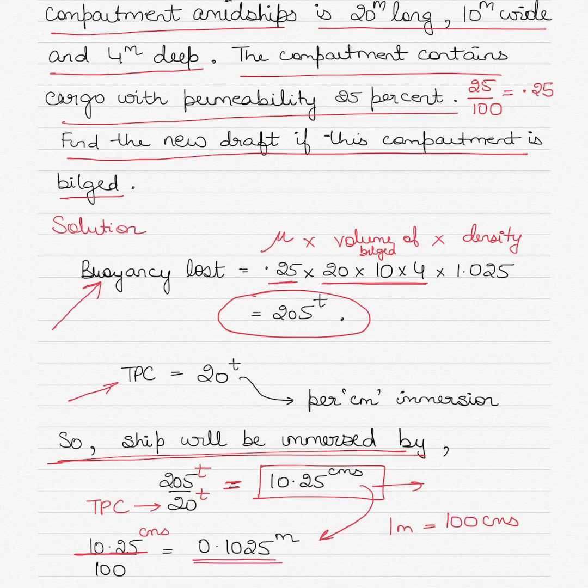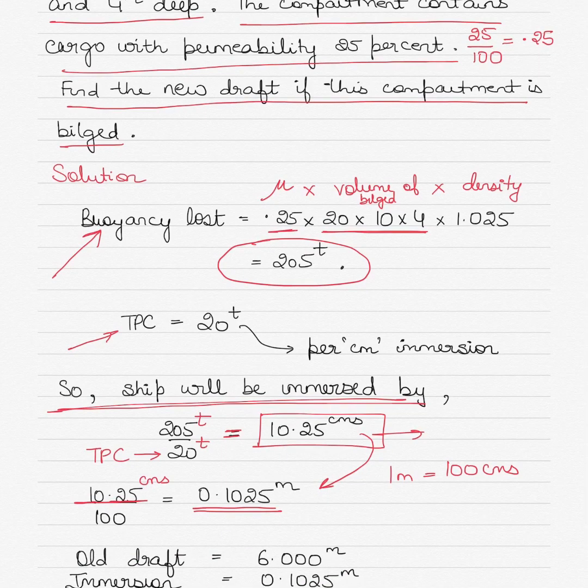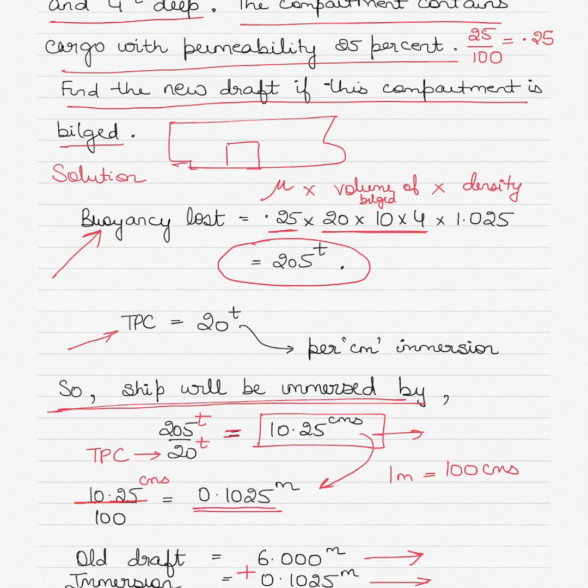This is the amount by which the ship has immersed. Now the old draft given to us is 6 meters. The immersion is 0.1025 meters. Of course it will immerse, because as the compartment starts to take in the water—imagine this is the ship, there is a midship compartment here, and it's now taking in water. I will show the water with blue color, it's taking in water now.